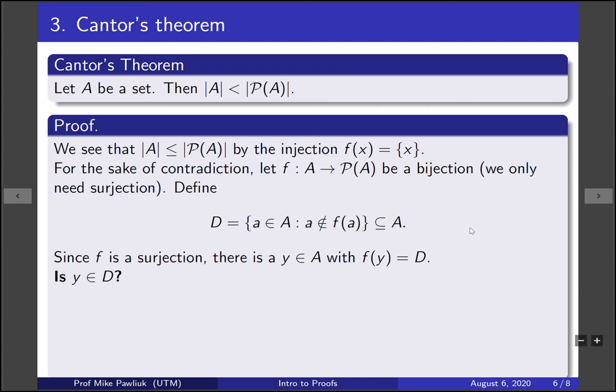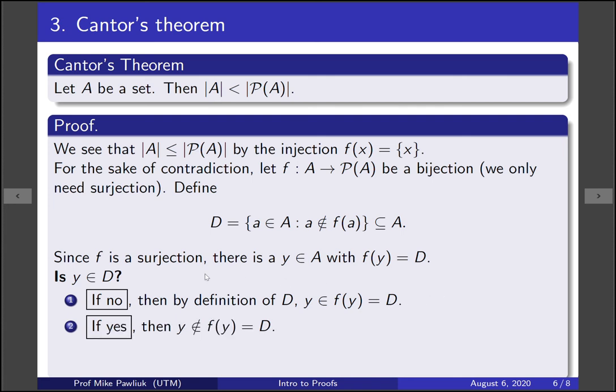Now we ask a simple enough question. Is y an element of D? Does y satisfy this condition? So the answer is either yes or no. If the answer is no, it's not in here, then that means that y is an element of f of y. So it doesn't satisfy this property, it satisfies the opposite. But we know that f of y is D. So if the answer is no, y is not in D, then the answer is yes, y is an element of D. Okay, so what if the answer is yes, y is in D? Well then it satisfies the property, which means that y is not an element of f of y. But f of y is D, so that means that if yes, then no. So this is a contradiction or a paradox.